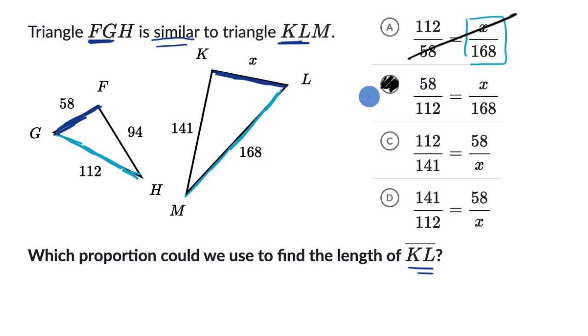So we're really done, but let me just look at these other ones, make sure that these aren't correct, even though I think there's only one choice here. 58 over X. So that's the ratio of this to this. And then they're saying that's the ratio of 112. That should be the ratio of 112 to 168. So if this had a 168 here, that would have been right.